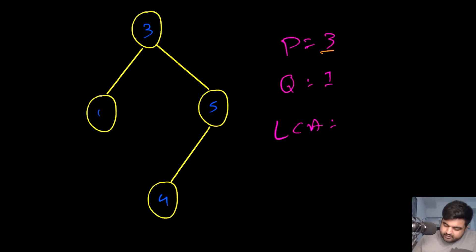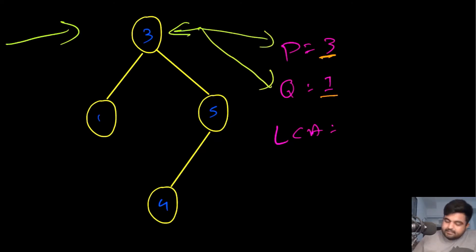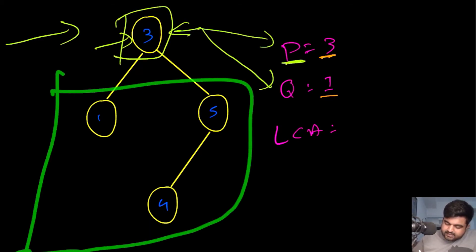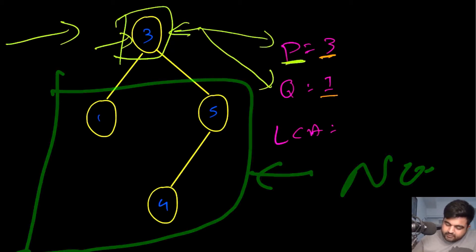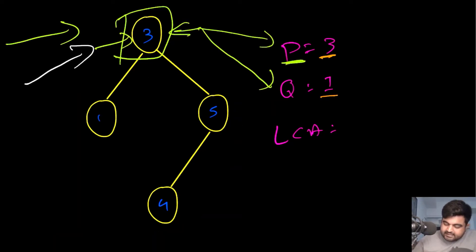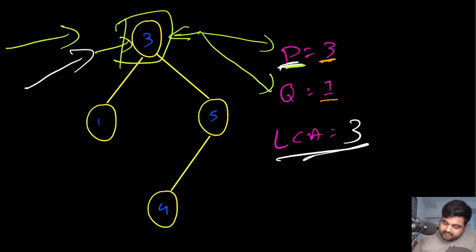Let's take one more very similar example where P is equal to three and Q is equal to one. We start traversing the binary search tree, and at the first value we traverse we immediately find a match with P. Do we really need to continue iterating? The answer is no, because we know that the Q value is somewhere going to be down below, making it a descendant of P. So we return three as the lowest common ancestor. Whenever we identify either P or Q, we can return that value immediately.